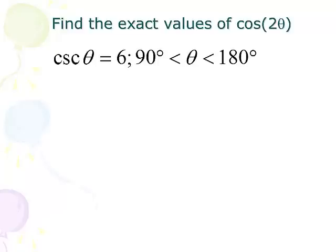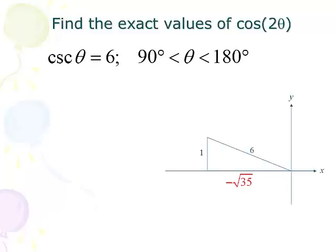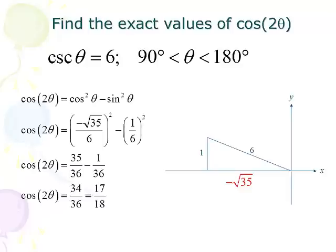Let's find the exact value of cosine 2 theta given that cosecant equals 6 and theta is in quadrant 2 (between 90 and 180 degrees). Cosecant is the reciprocal of sine, so sine equals 1/6. Using the Pythagorean theorem, the adjacent side is negative square root of 35. Using cosine 2u equals cosine squared minus sine squared, cosine is negative √35/6 and sine is 1/6. Squaring gives 35/36 minus 1/36, which reduces to 34/36, then 17/18. So cosine 2 theta equals 17/18.